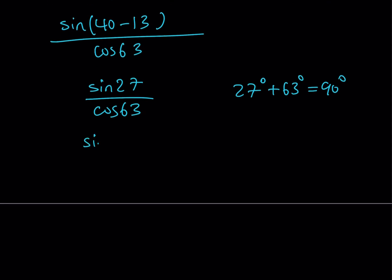So sine of one of the angles is going to equal the cosine of the other angle. In other words if you replace sine 27 with sine of 90 minus 63, and then divide it by cosine of 63, you can now write sine 90 minus alpha as cosine of alpha which is cosine 63. So we divide by cosine 63 and that's going to give you 1.